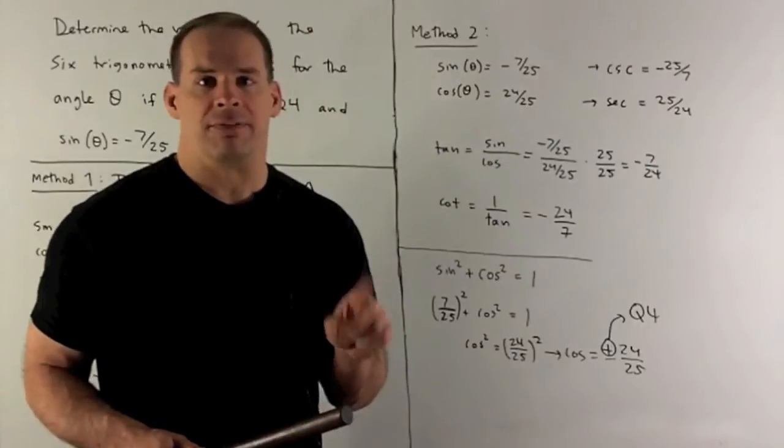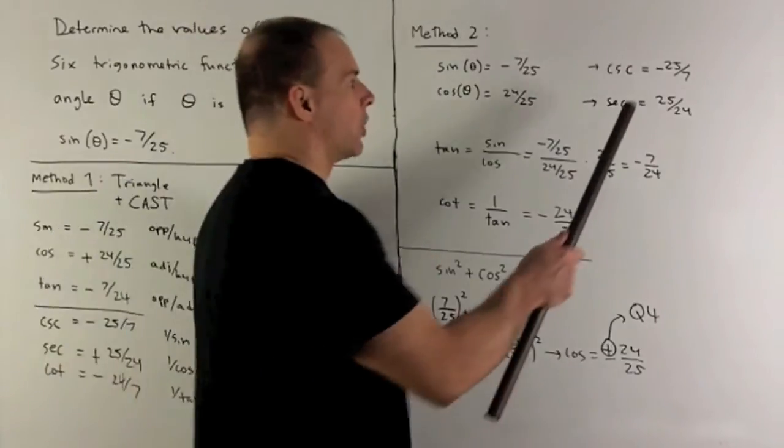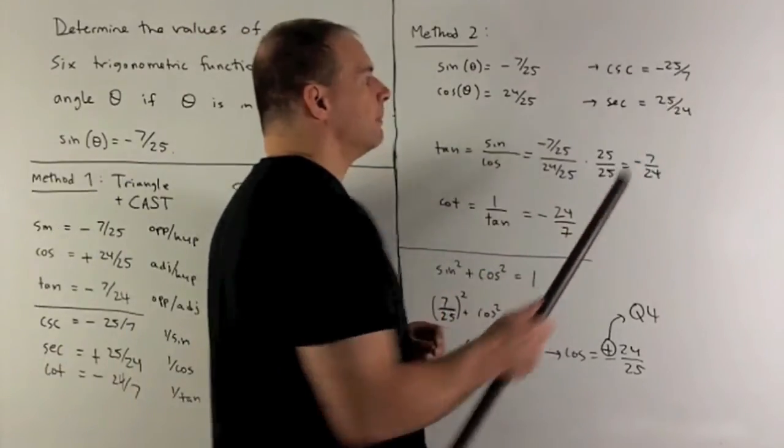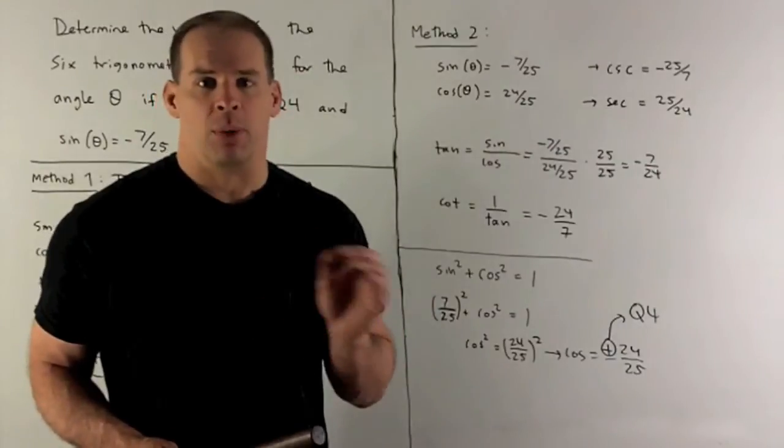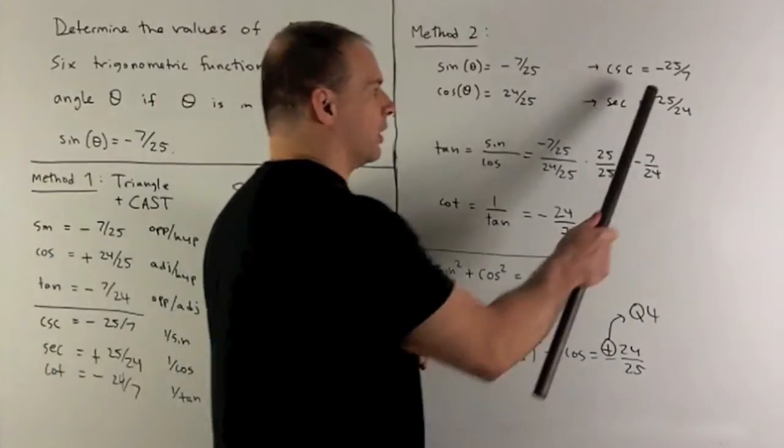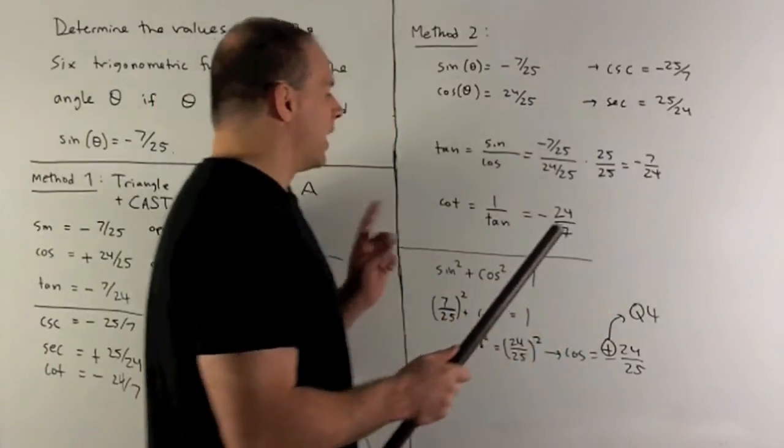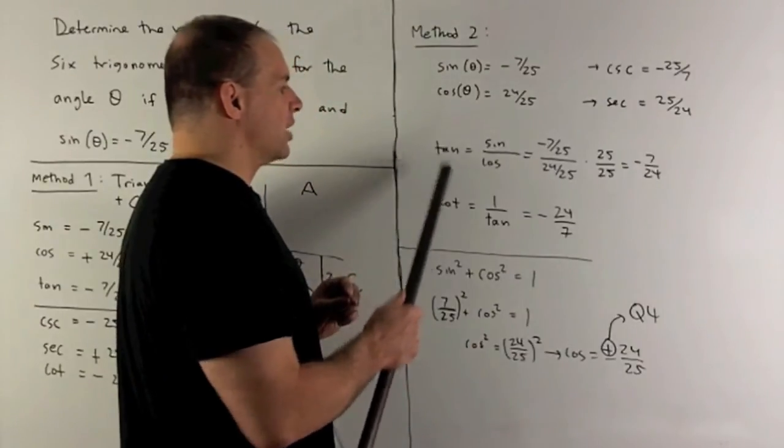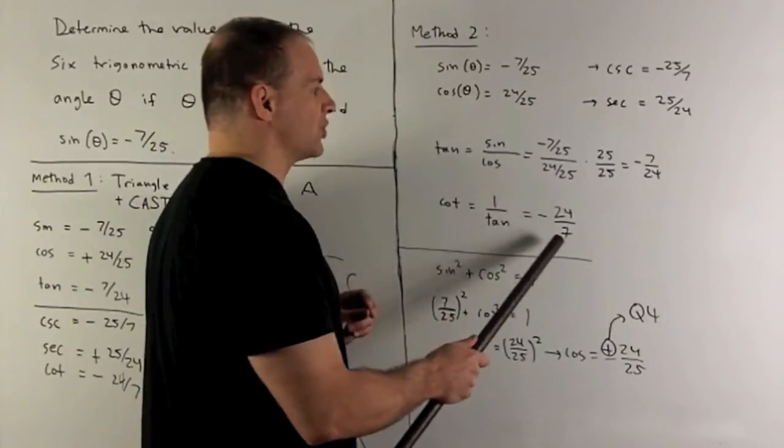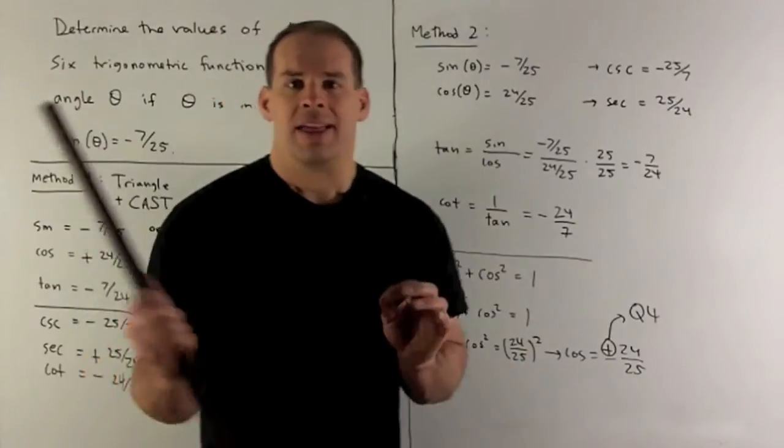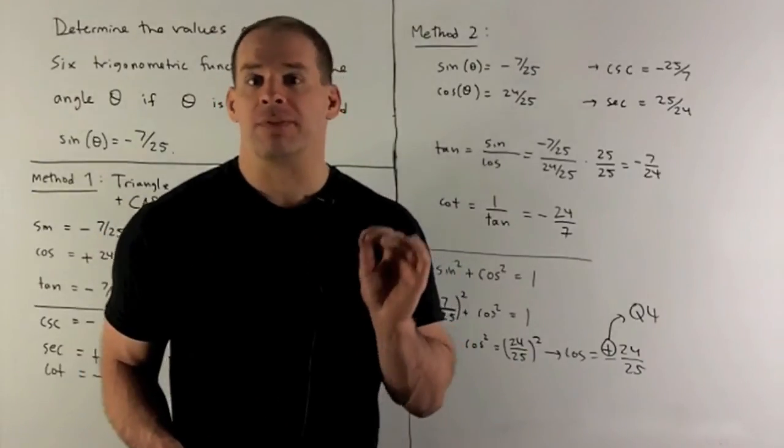If I want cosecant, I flip over sine, so I'll have minus 25 over 7. If I want secant, I flip over cosine, I get 25 over 24. And then if I want cotangent, we flip over tangent, we get minus 24 over 7. So we note that checks all the work that we got using our first method.